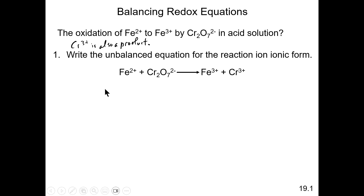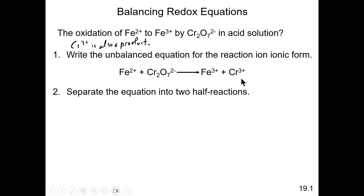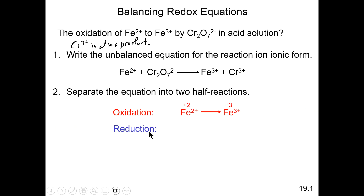So Fe2+ is one of the reactants, the dichromate is the other reactant, and these are the two products. That's the first step. Now the second step is that you separate this equation into two half equations — one is the oxidation half equation, which is the conversion of Fe2+ to Fe3+, and the other is the reduction half equation where the dichromate is converted to the Cr3+ ion.